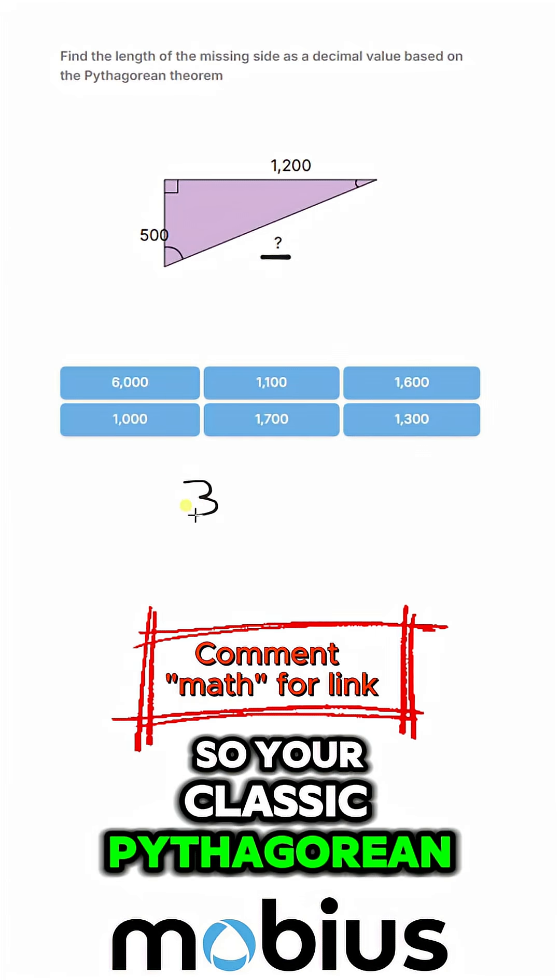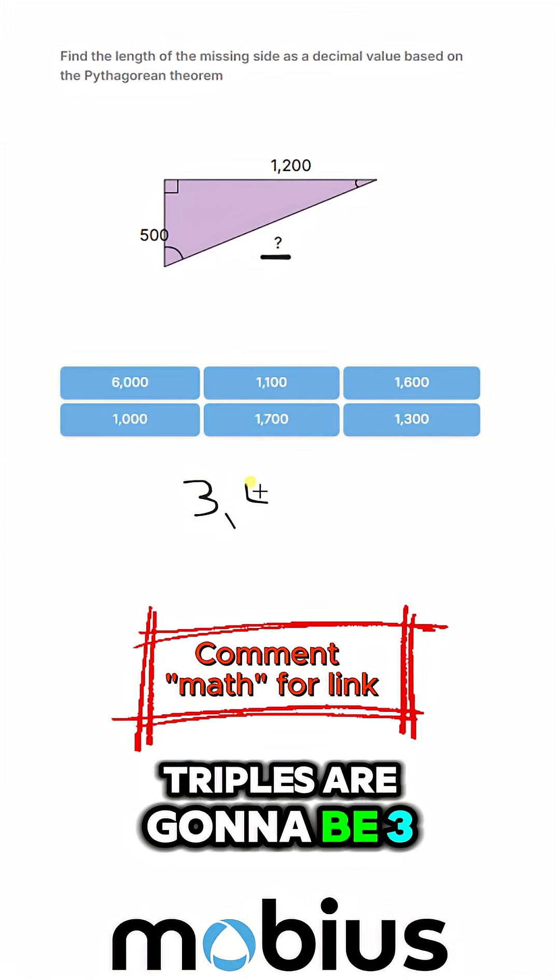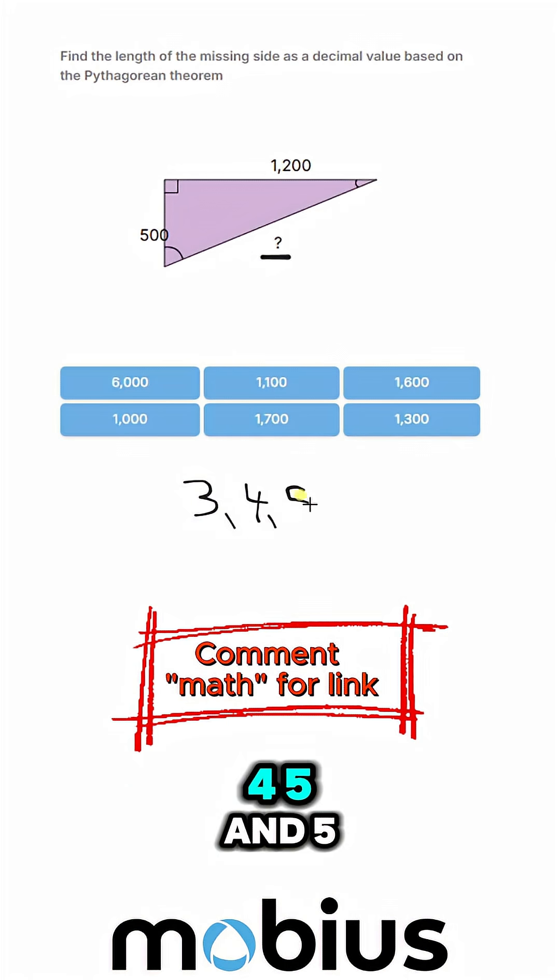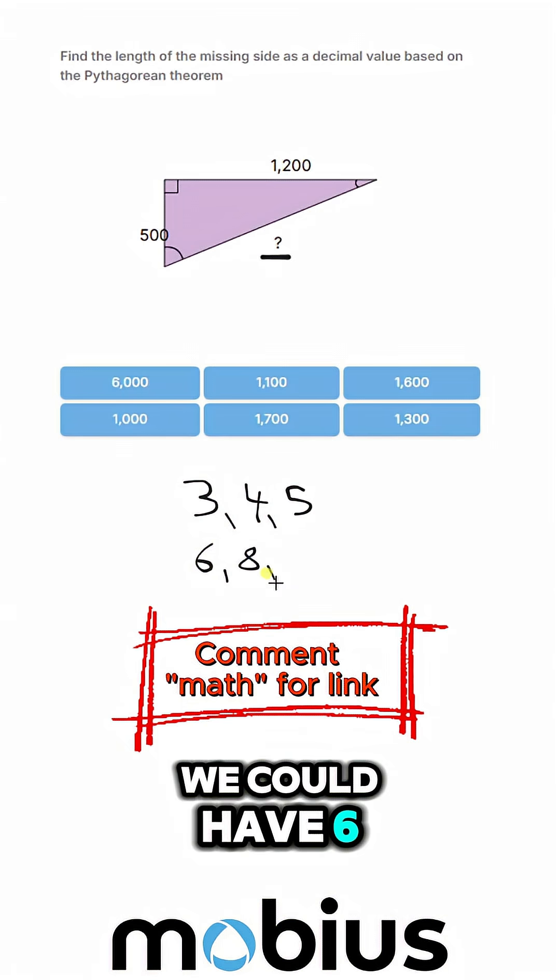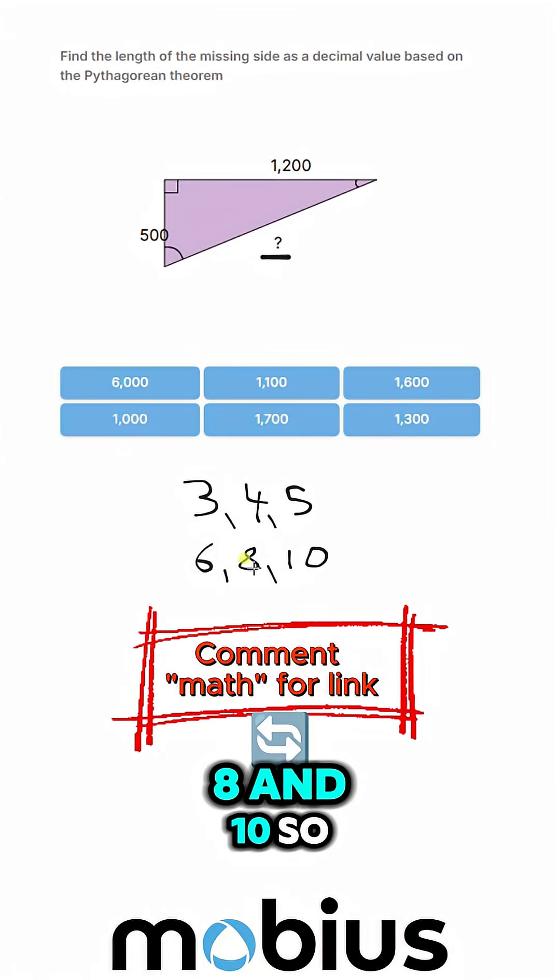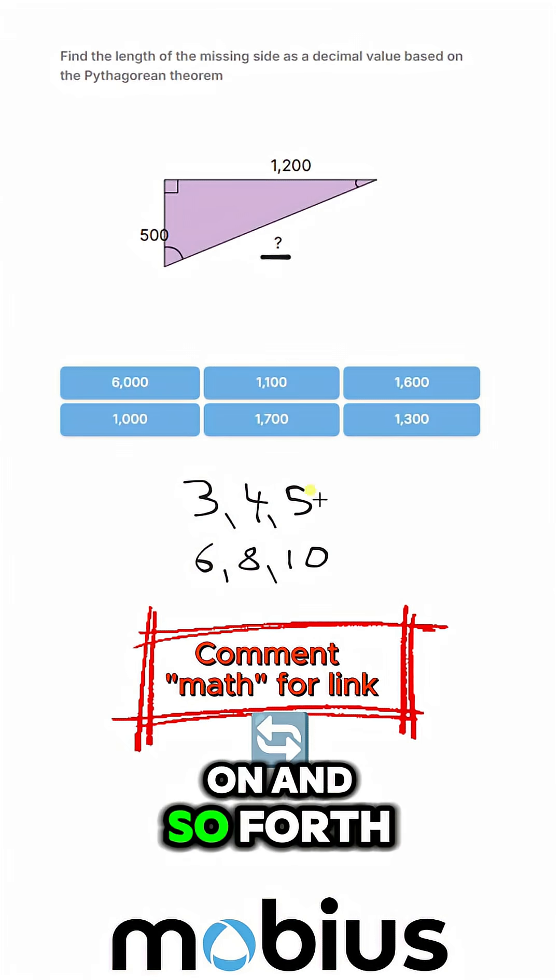Your classic Pythagorean triples are going to be 3, 4, and 5. If we have a length of 3, 4, 5, or any multiple of those, we could have 6, 8, and 10, and so on.